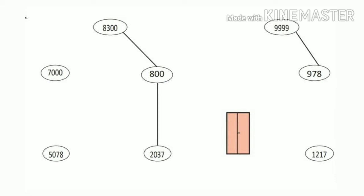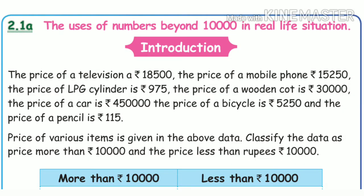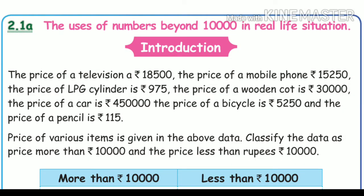So we should know ascending order and descending order — that is the recall activity. You have to do it in your book. Page number 25, section 2.1A covers the uses of numbers beyond 10,000 in real life situations.